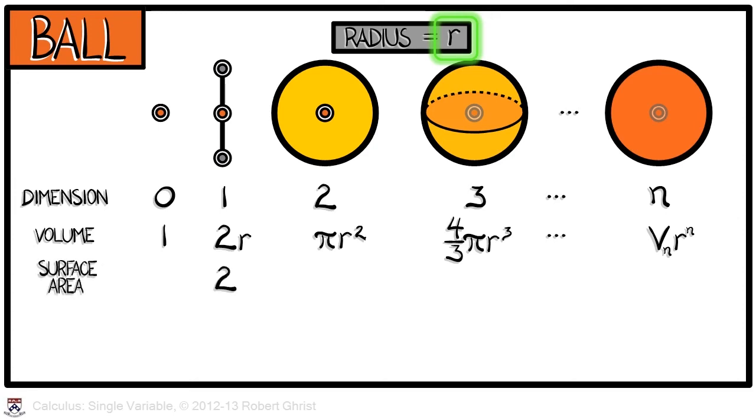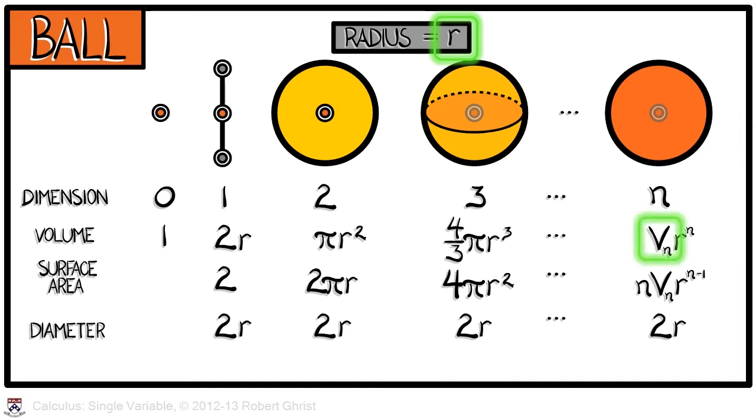The surface area is what? In the one-dimensional case, it's 2. In the two-dimensional case, we're looking at the circumference. That's 2 pi r. In the three-dimensional case, the surface area of the ball is 4 pi r squared. Do you see a pattern? Yes, it's related to the derivative. In fact, it's going to be, in the n-dimensional case, n times v sub n times r to the n minus 1. You'll be able to prove that result in multivariable calculus. What's the diameter? Well, in all cases, it's equal to 2 times r, or in the unit case, 2.